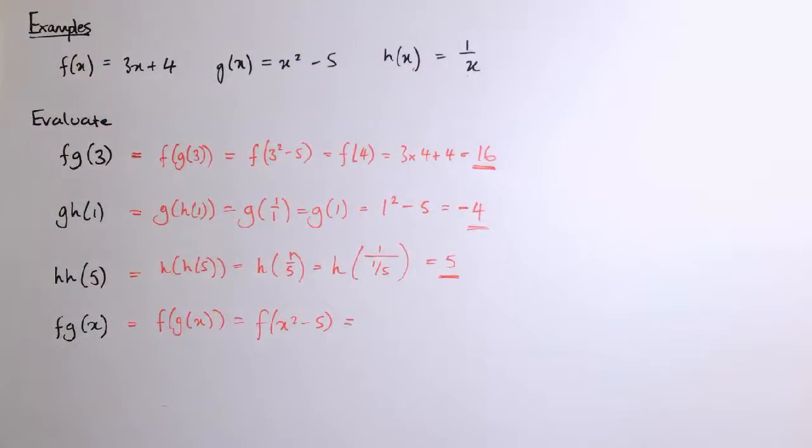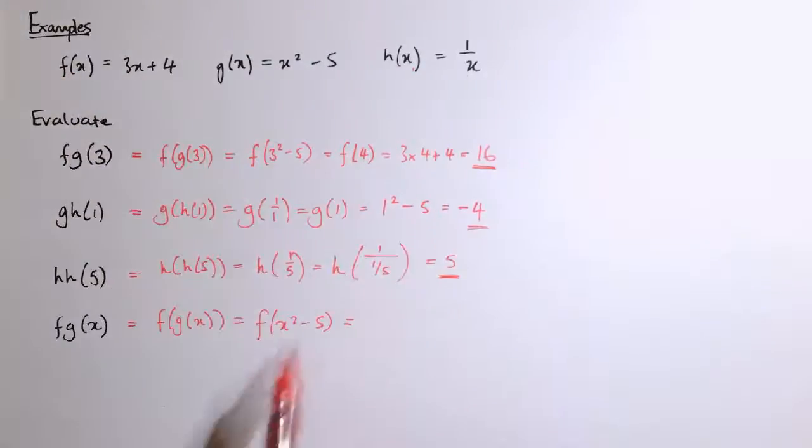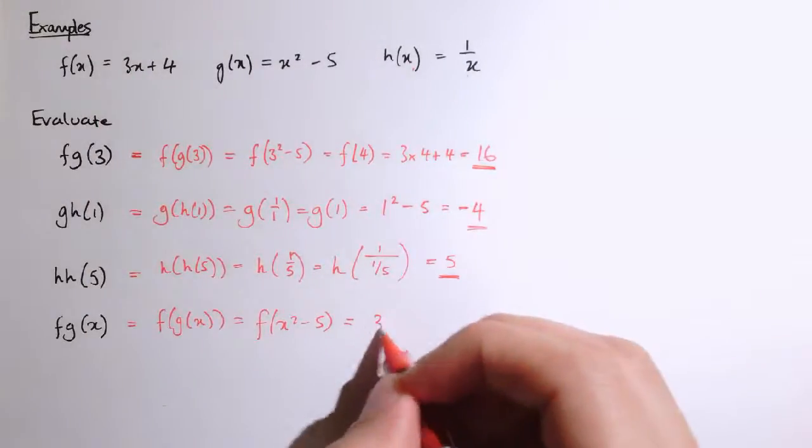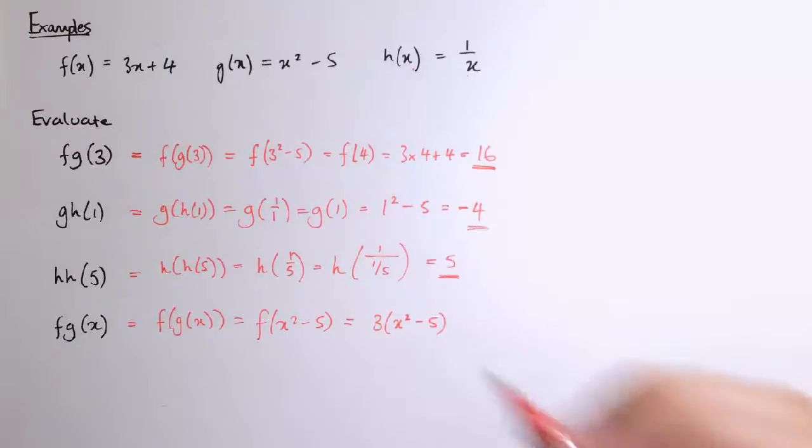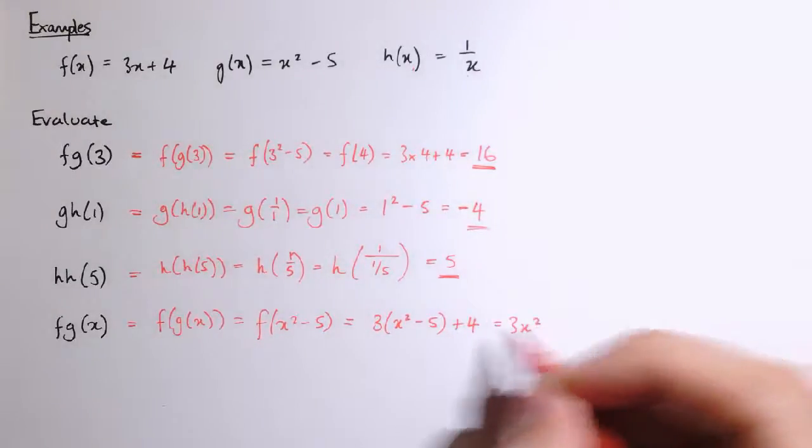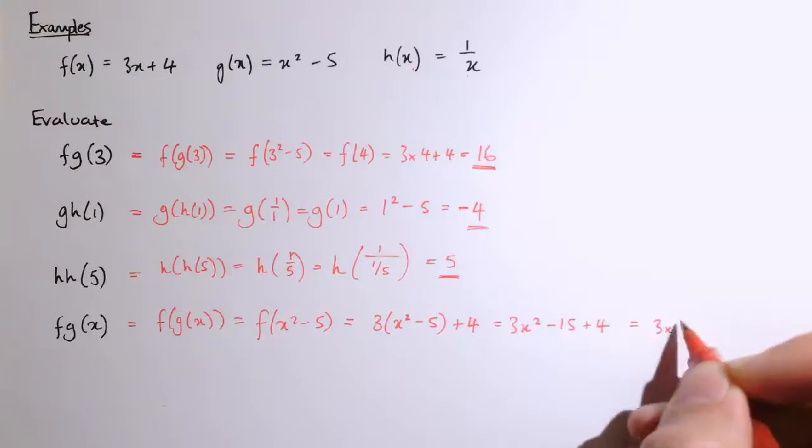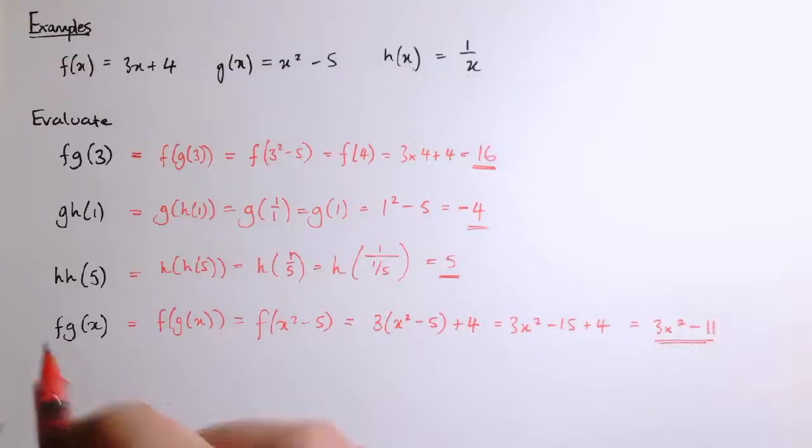So if we're going to put x squared minus 5 into the function, we need to replace the x in the rule of that function with x squared minus 5. So I'm going to get 3 times x squared minus 5 plus 4, so that's 3x squared minus 15 plus 4, which is 3x squared minus 11. That would be an alternative rule that would combine f and g.